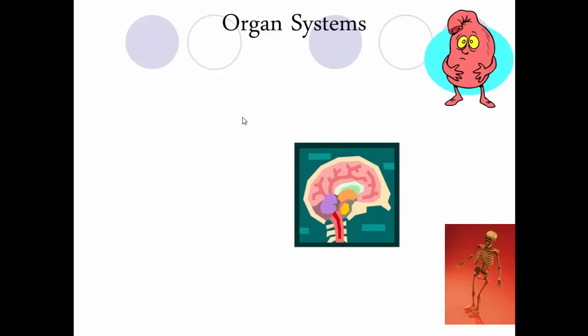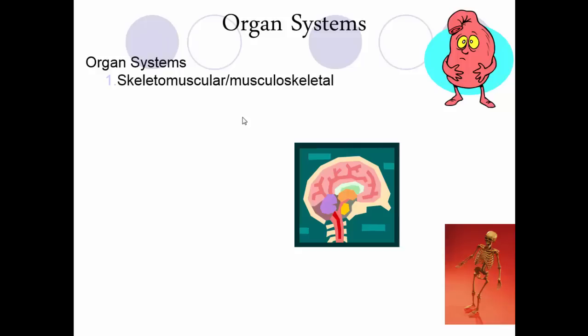Let's talk about the various organ systems of the body. The musculoskeletal system forms the structure and support for your body — your muscles and skeleton give you structure, support, and allow for movement. The respiratory system allows you to breathe and enables the exchange of oxygen and carbon dioxide. The excretory system allows you to get rid of waste, including urine and feces. The integumentary system — the skin system — provides an external barrier and is a location for blood vessels and receptors for pain and temperature.